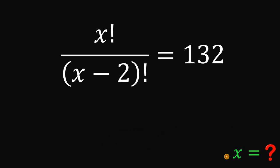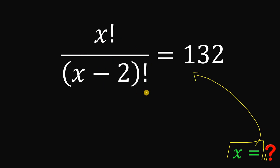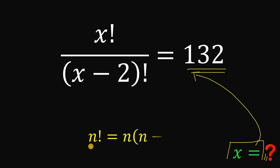Alright, so our goal here is to solve for the positive integer value of x that satisfies this equation: x factorial over x minus 2 factorial equals 132. To answer this question, we will use some concepts regarding factorials.